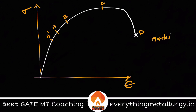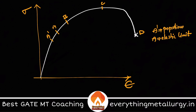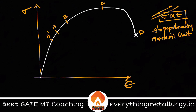Up to point A, elastic deformation takes place — the material can recover its original shape. Point A-dash is the proportionality limit: elastic deformation is usually considered linear, meaning stress is proportional to strain, but in practice this linearity holds only up to A-dash. After A-dash the curve starts to deviate from linearity, though the region between A-dash and A is still elastic. This linear relationship is called Hooke's Law: stress is directly proportional to strain, or sigma equals E times epsilon, where E is the Young's modulus of the material.